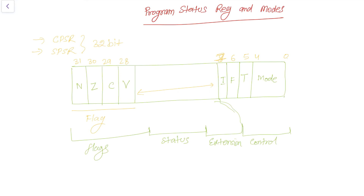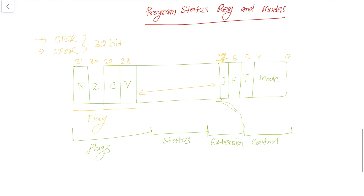This is all about the program status registers and the bits. When the microcontroller performs an ALU operation it updates the flag registers according to the result. If the operation produces a carry, the C flag is set to 1. If the result is 0, the Z flag is raised high. If overflow occurs, the V flag is set to 1. If the result is negative in a signed operation, the N flag is set to 1. Finally, the first five bits decide what is the mode of the processor.